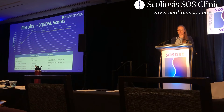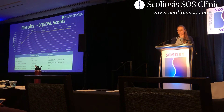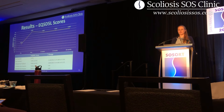Before treatment, the average EQ5D score was 0.773, and immediately after treatment this increased to an average of 0.881. At six months the average was 0.862, and at both 12- and 18-month check-ups the average was maintained at 0.863. All of these changes were statistically significant.